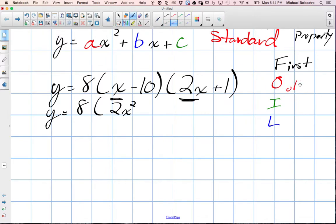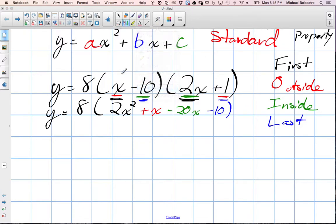Then we do the outside. Outside terms means farthest left and farthest right. So then that would be the x, and the farthest right would be the number one. So x times one is just positive x. Then you have your inside, your inside terms. Those are the closest together inside. So that's the negative 10 and 2x. So negative 10 times 2x is negative 20x. And finally, L for last. The last terms are the last in each bracket, which is negative 10 and positive 1, which when multiplied become negative 10.